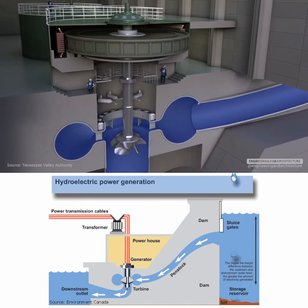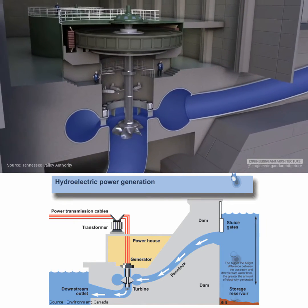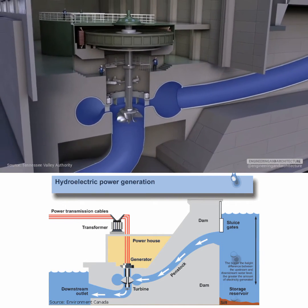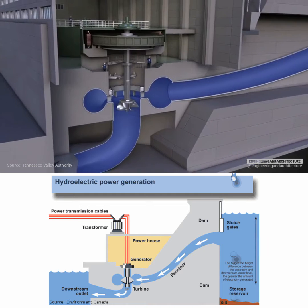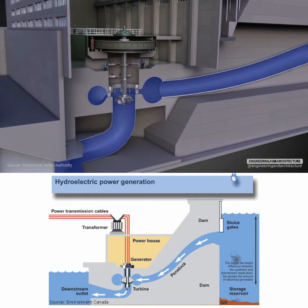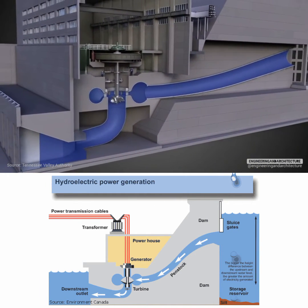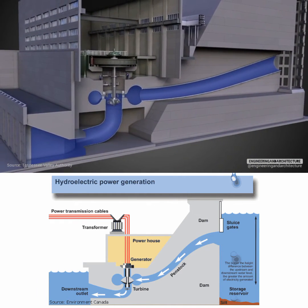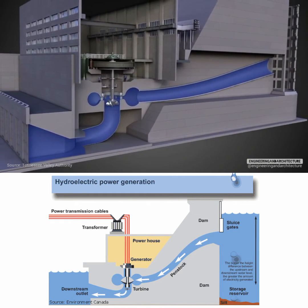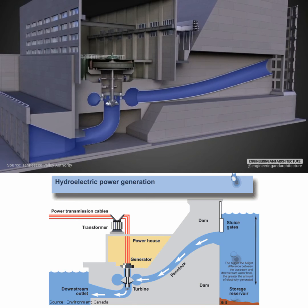When the turbine spins, it turns a metal shaft which goes up to an electrical generator. As the shaft turns, it causes the generator to rotate, producing electricity.